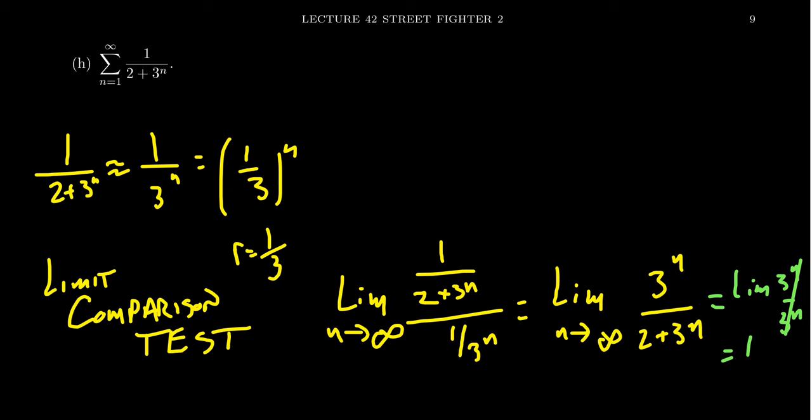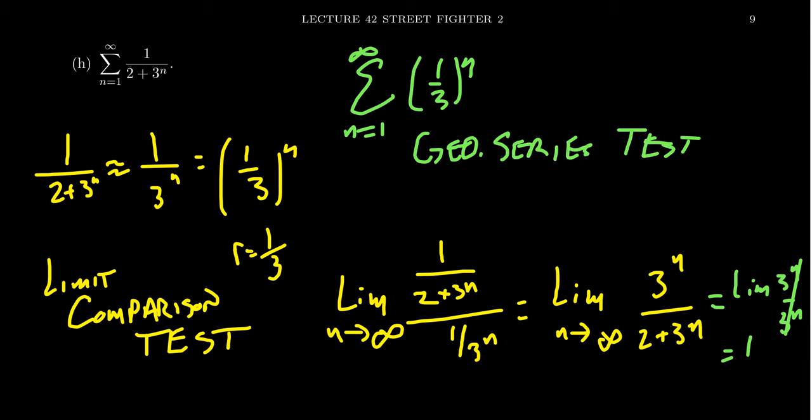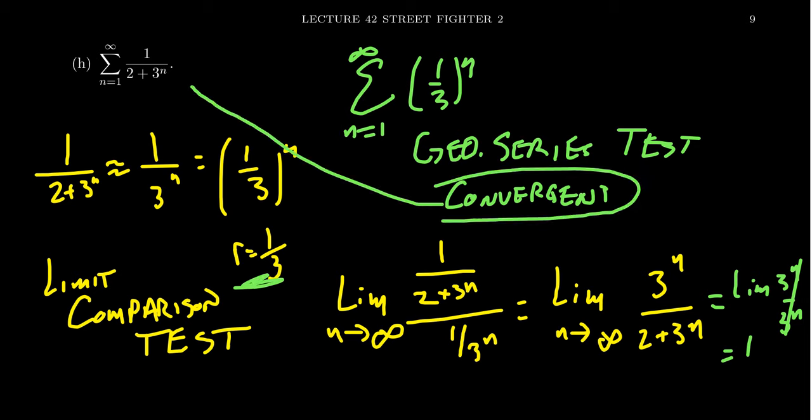So the limit comparison test would be applicable here. And so since the series 1 over 3 to the n, I should take the sum from 1 to infinity here. This was a geometric series. So the geometric series test applies. This tells us that this associated series is convergent because our ratio was small. And therefore, by the limit comparison test, we then get convergence of the original series.